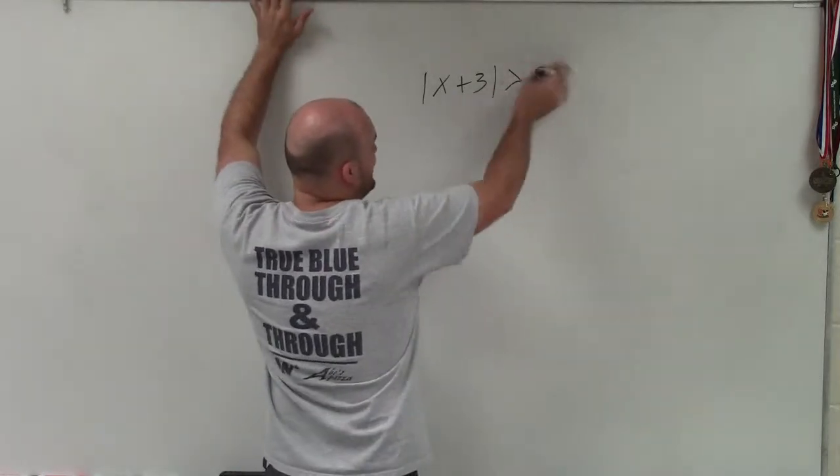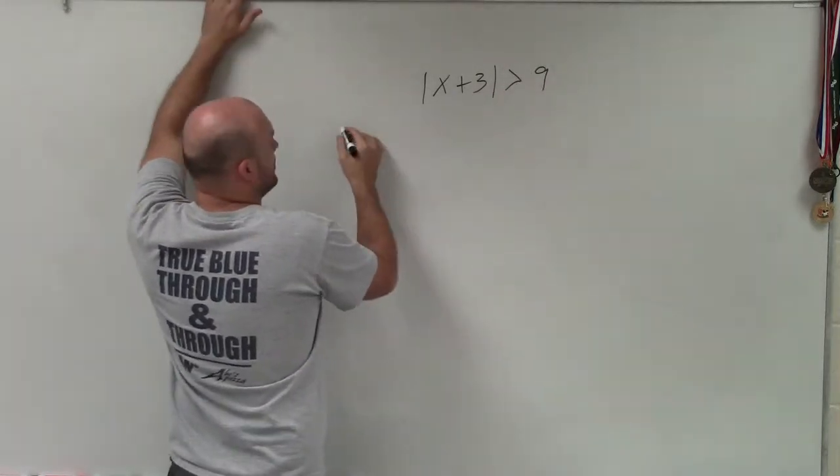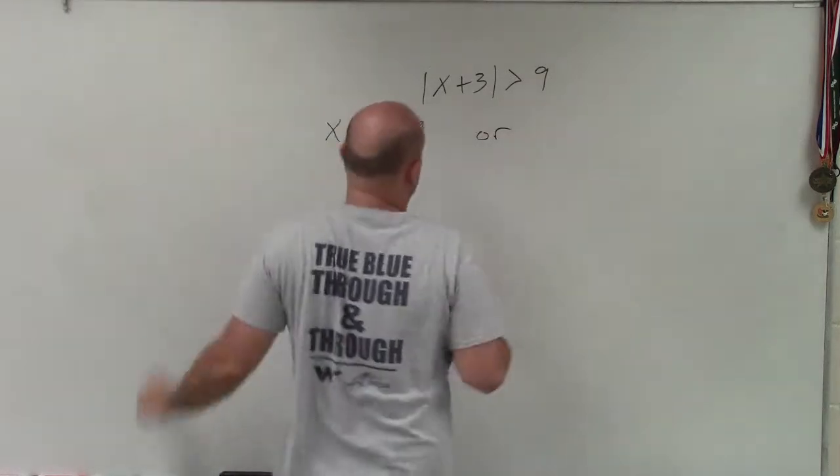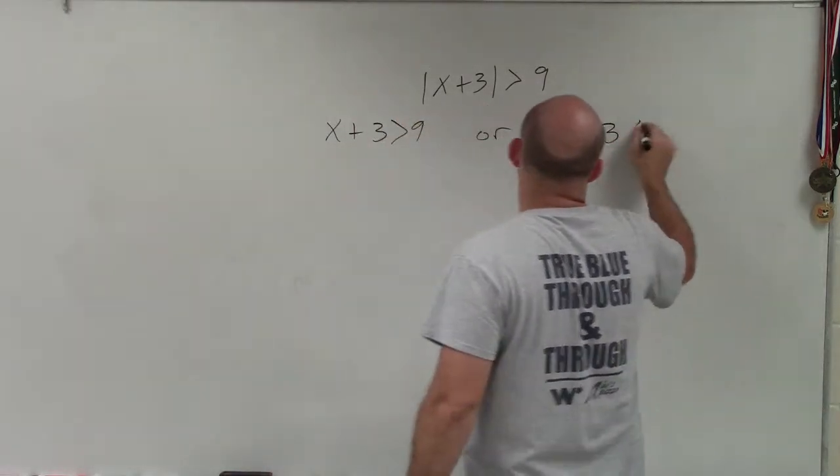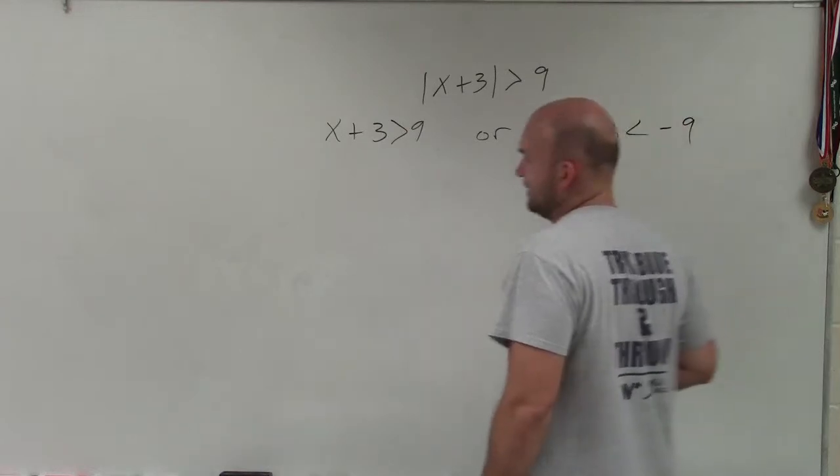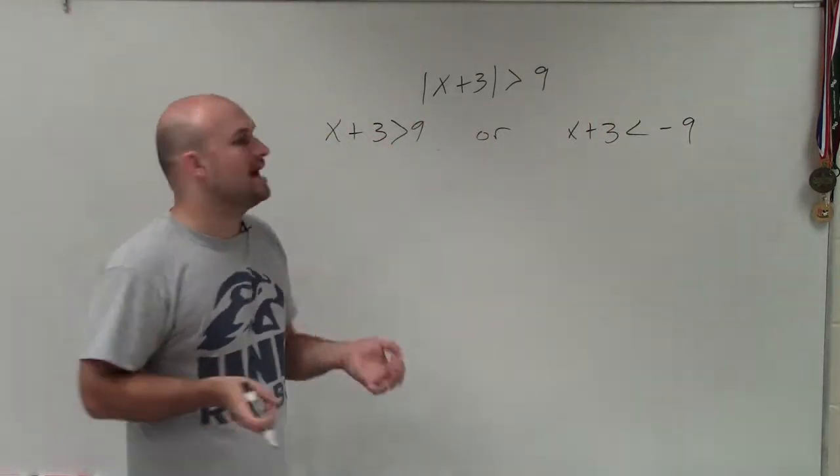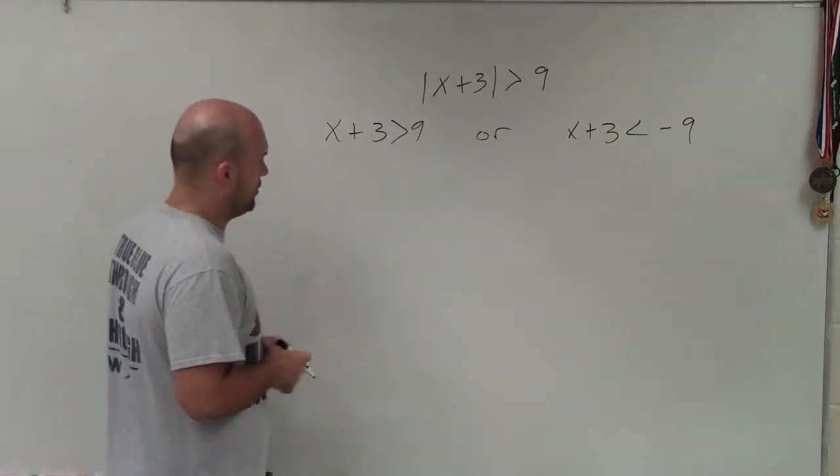When we have absolute values greater than 9, my compound inequality that I'm going to create is x plus 3 is greater than 9, or x plus 3 is less than negative 9. So I create my two cases, but I also create now a compound inequality.